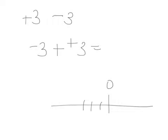Now I'm at negative 3 plus positive 3. Well, positives move to the right. 1, 2, 3. And I'm back at 0. So negative 3 plus positive 3 equals 0.